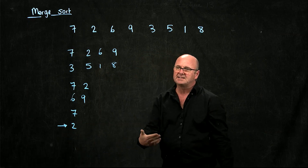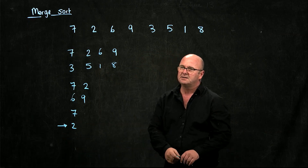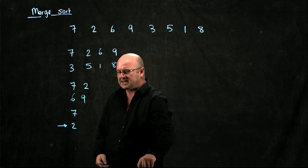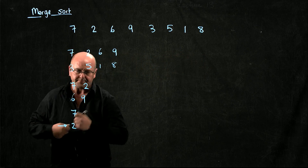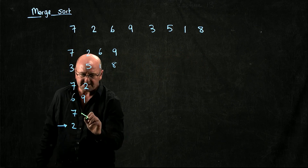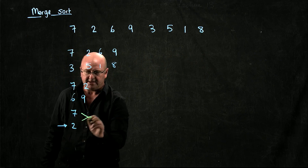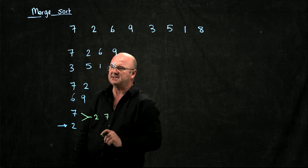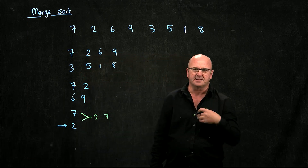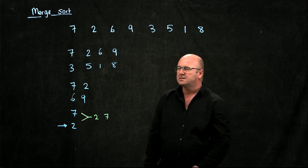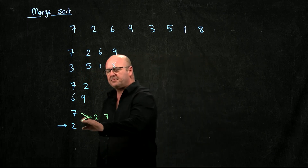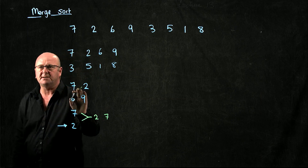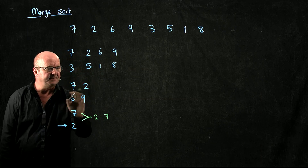Now what we've got to do is put it back together in about the right order. So we take the two and the seven, and when we put these back together, two is less than seven, so we'll put the two and then the seven. So we've made good on our promise to sort the first half of this list.